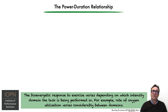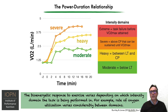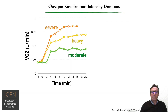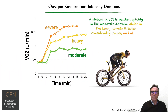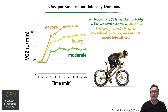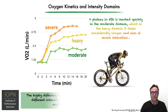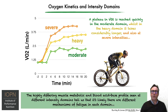The bioenergetic response to exercise varies depending on which intensity domain the task is actually being performed in. For example, the rate of oxygen utilization varies considerably between these domains. In terms of oxygen kinetics, a plateau in VO2 is reached quickly in the moderate domain, whilst in the heavy domain it takes considerably longer, and in a similar fashion at severe intensities. The highly differing muscle metabolic and blood acid-base profile seen at these different intensity domains tells us that it's likely that there are different mechanisms of fatigue in each of these domains.